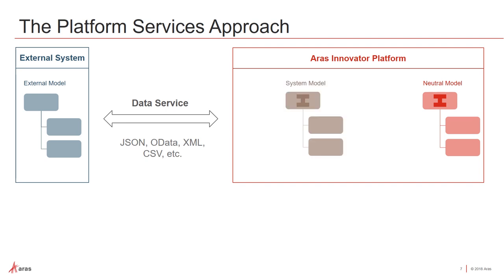Now we're looking at something a bit different than the current approach to federation on the ARIS platform. Here we have a system model — an ARIS item type or structure of item types that in a one-to-one manner directly represents your external model, the data model in your external system. This allows us to create mappings that can be reused across systems and neutral models.